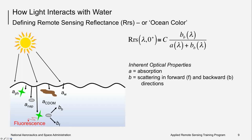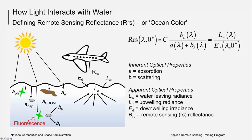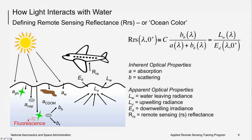Remote sensing reflectance is used in ocean color algorithms to compute data products of interest, like chlorophyll concentration. It can be defined as the ratio of backscattering to total absorption and backscattering as affected by local sun and sky conditions. Alternatively, it is the water-leaving radiance just above the surface divided by the downwelling air radiance incident on the sea surface. This equation shows the relationship of the inherent optical properties to the quantity and quality of light in the underwater light field, allowing us to infer concentrations of optically active constituents in the upper water column.